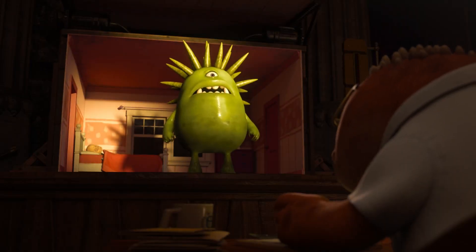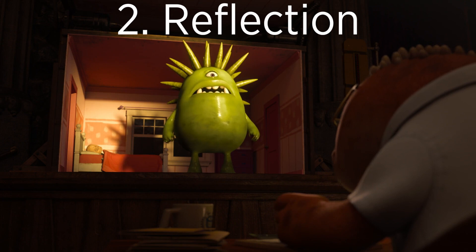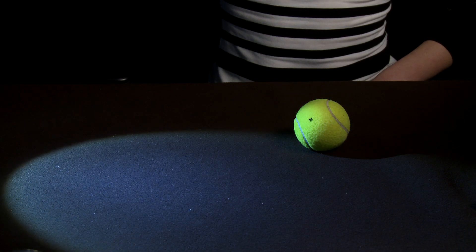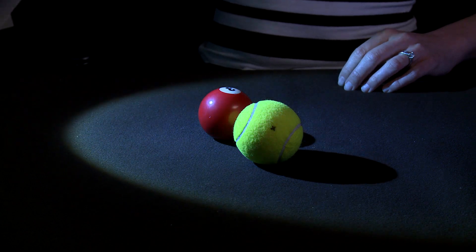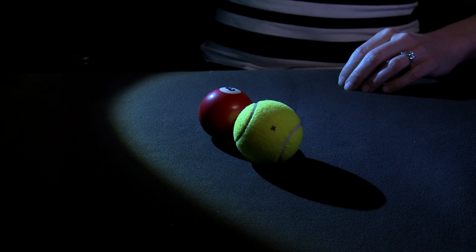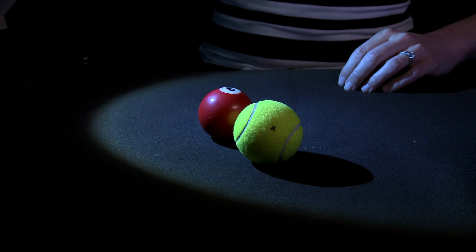The second factor is, how does the surface reflect light? The color of an object is a big part of how it responds to light, but it's not the only factor. Some objects have a fuzzy or dull appearance, like the tennis ball. Others are shiny and display bright highlights, like this pool ball. These two objects are receiving the same amount of light, but they look very different.